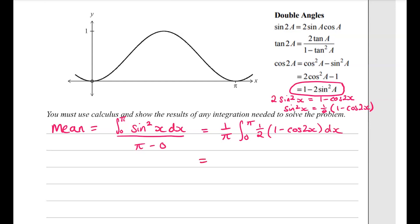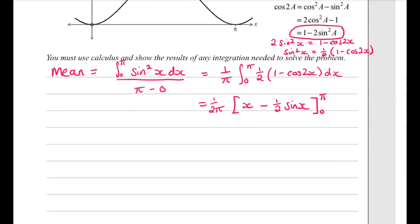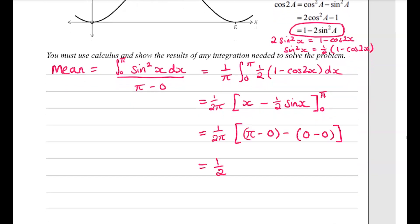So this becomes 1 over 2 pi, taking that half outside. 1 integrates to x, and cos 2x integrates to half sine x. Now we'll substitute in the values. That gives us a final answer of a half.